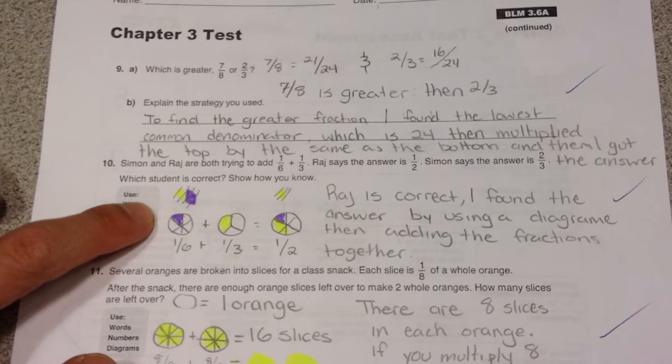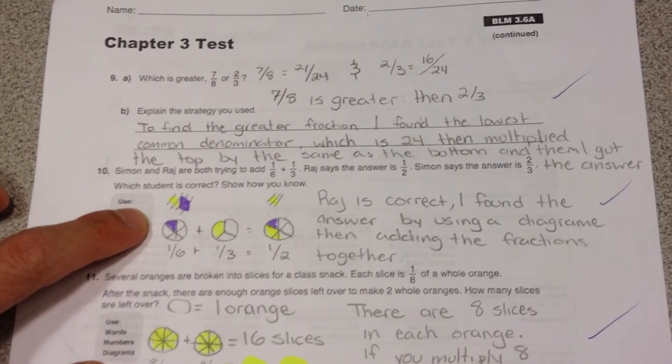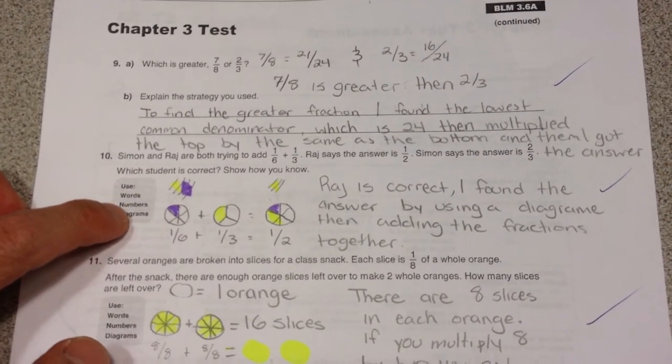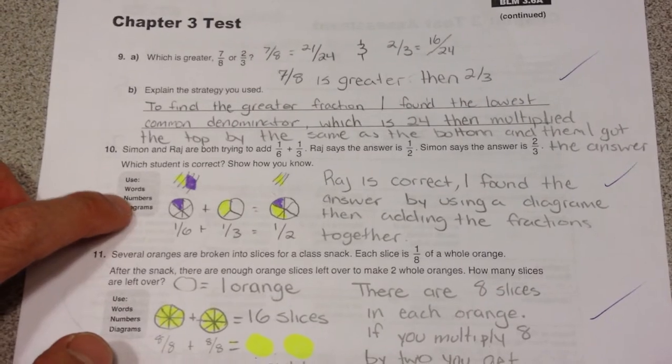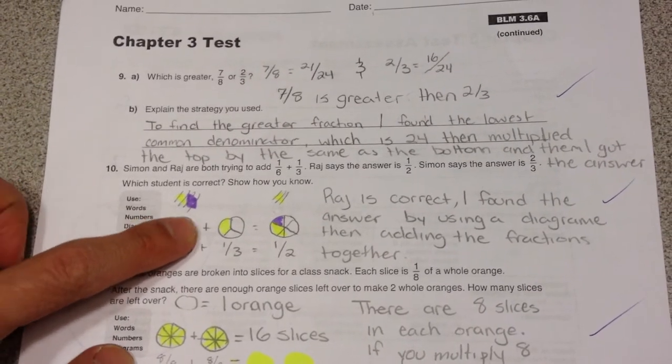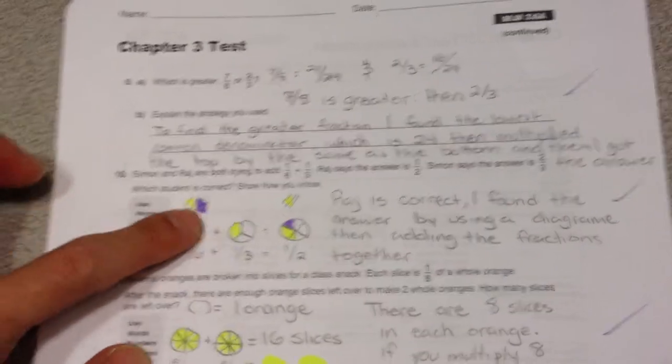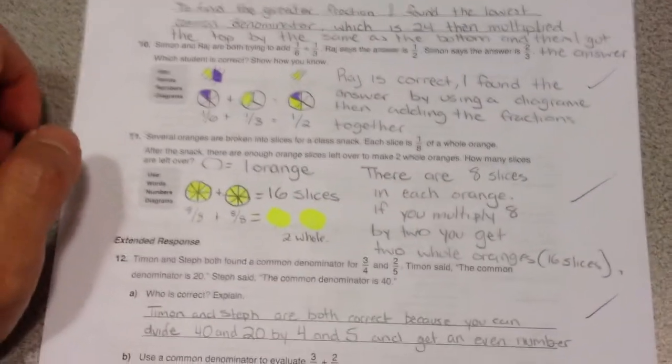Over here, Raj is correct in their disagreement, whether it was 1/2 or 2/3. And there could have been many different ways. Some people might have chosen to show it through pictures, through numbers, or through words, and ideally a combination.